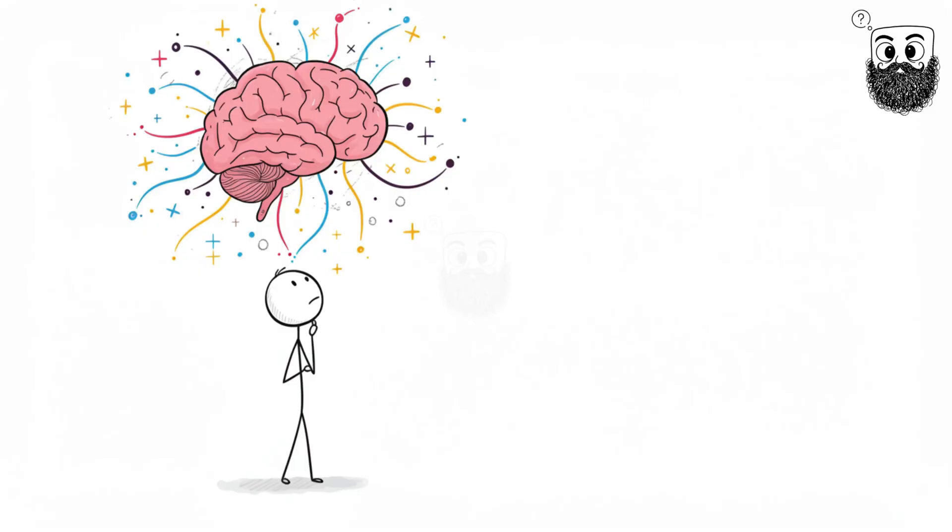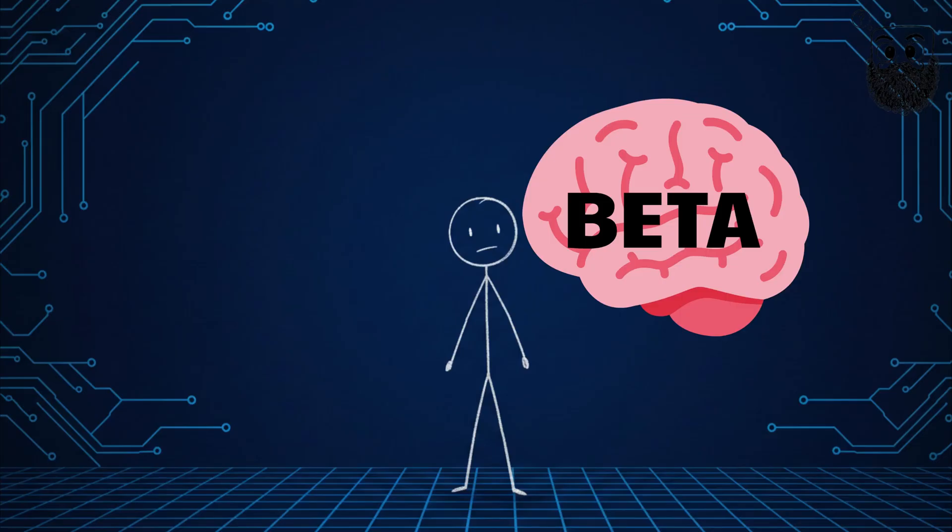Scientists think it might be due to extra connections in the brain that didn't get removed during development. Like the brain kept some beta features that most people's brains delete.